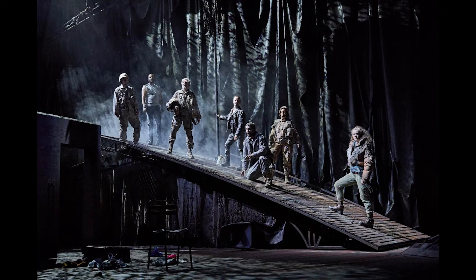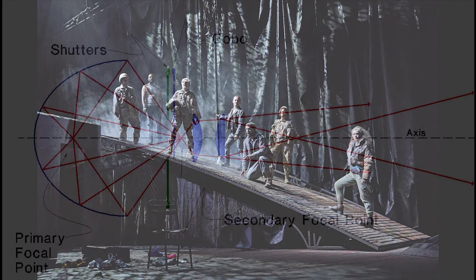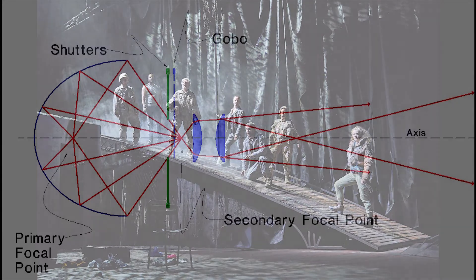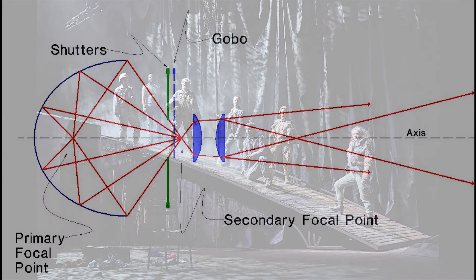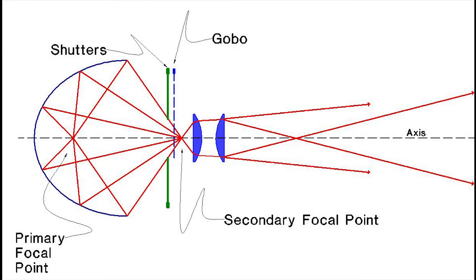Dicho patrón se coloca en una ranura que los reflectores elipsoidales tienen junto a las cortadoras. En ese lugar se encuentra la puerta o plano focal, que es el punto en el que los rayos proyectados convergen.